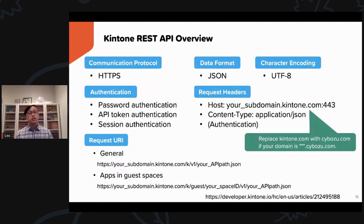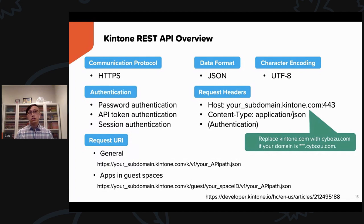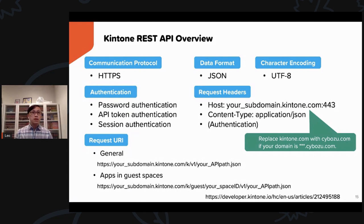Additional important information about Kintone's RESTful API: Kintone uses HTTPS as a protocol, meaning your API requests are encrypted. Kintone only accepts JSON data format and the default character encoding is UTF-8. There are three types of authentication: user password authentication, API token authentication, and session authentication. In the request header, you need to include your host information, content type, and authentication.